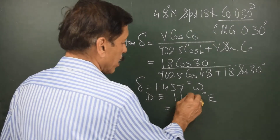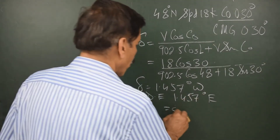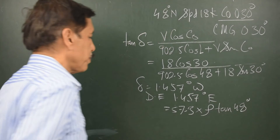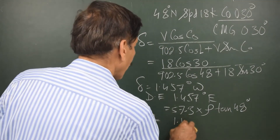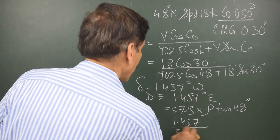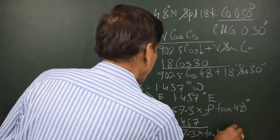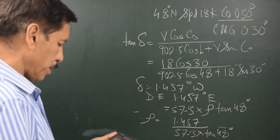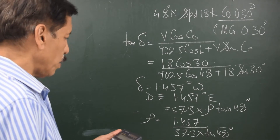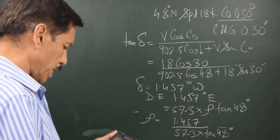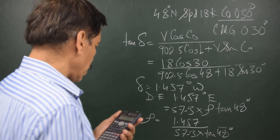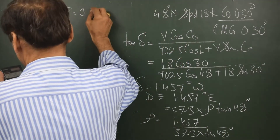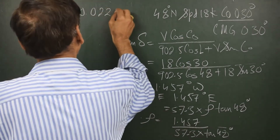The damping error equals 57.3 × ρ × tan(48°). So rho equals 1.457 divided by 57.3 × tan(48°). Therefore, rho is equal to 0.0229.